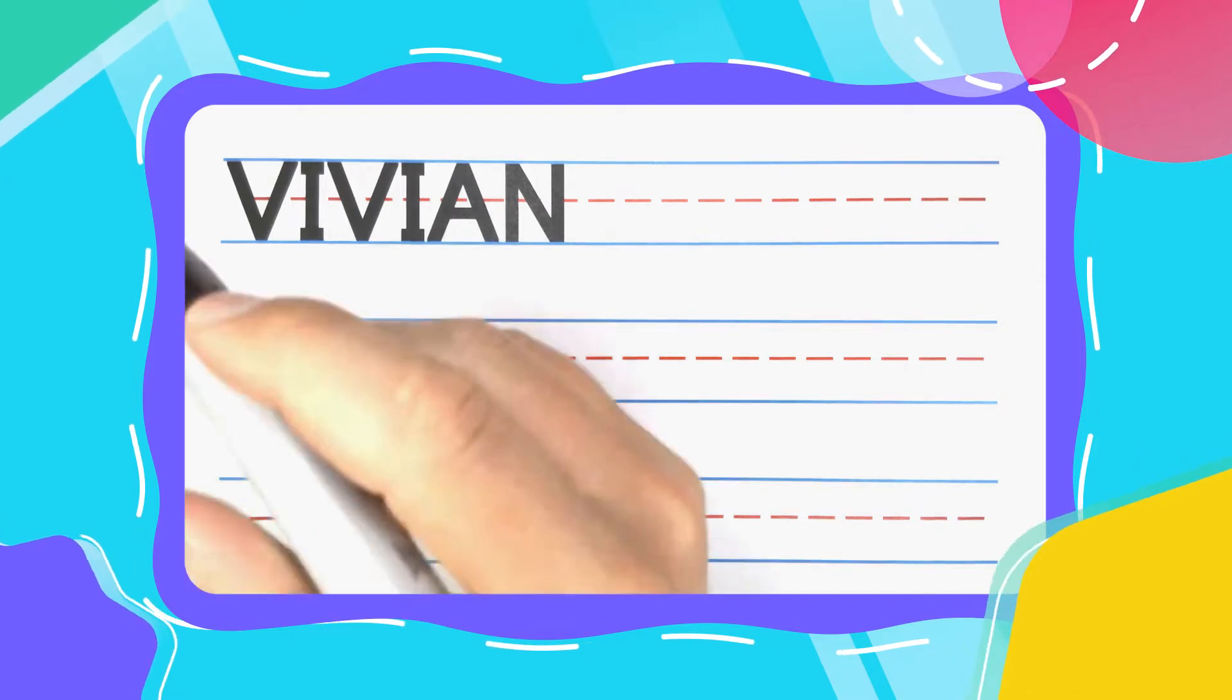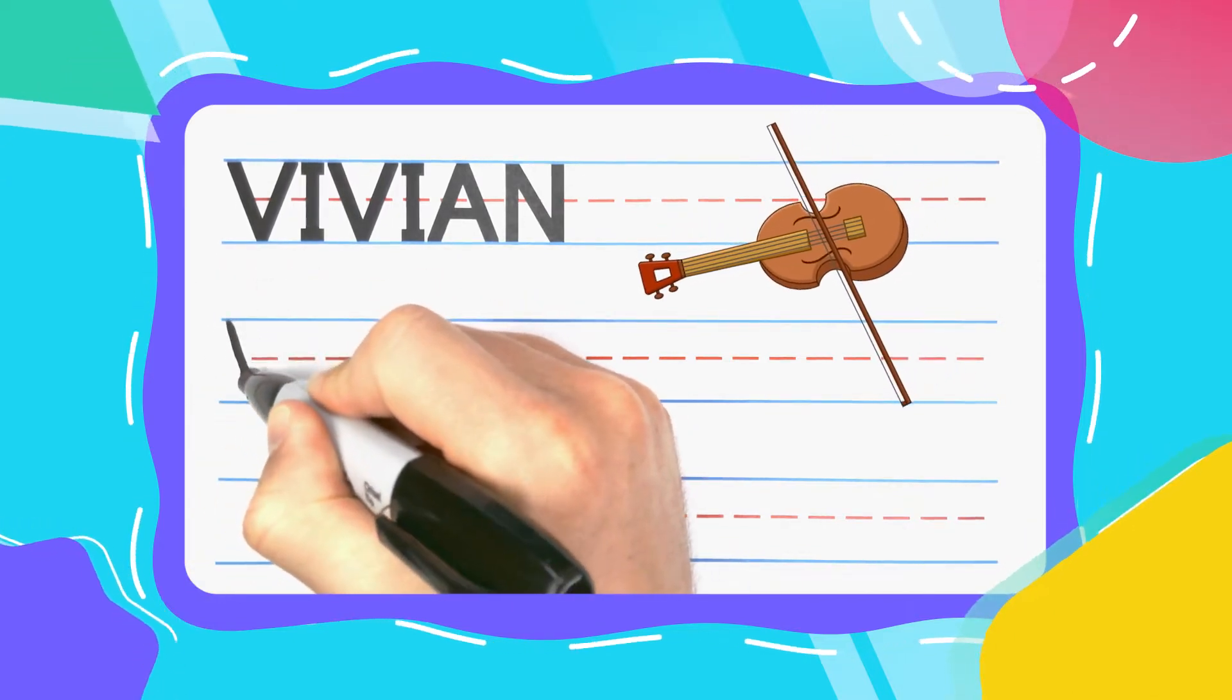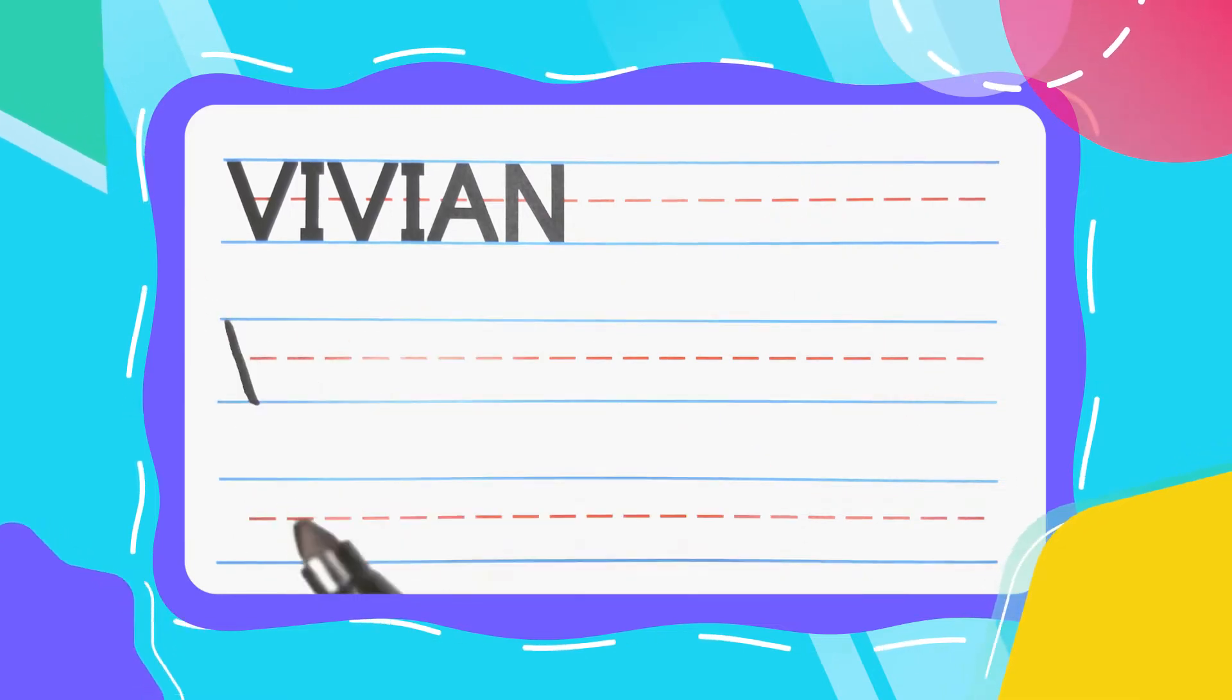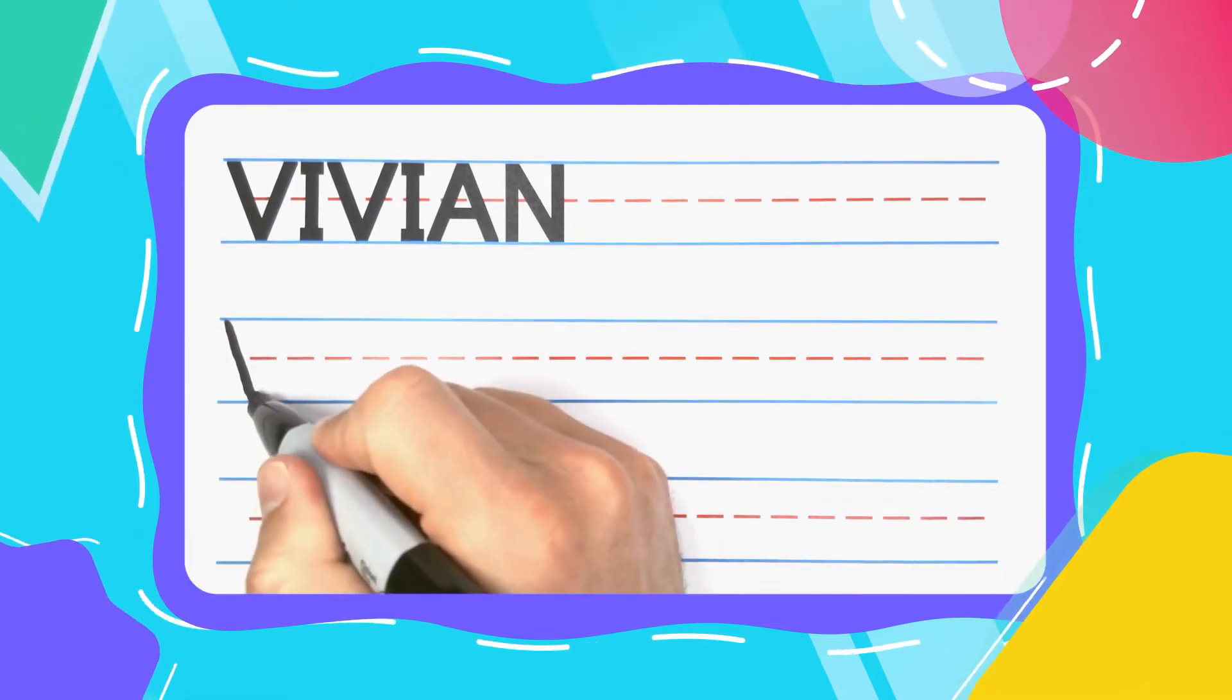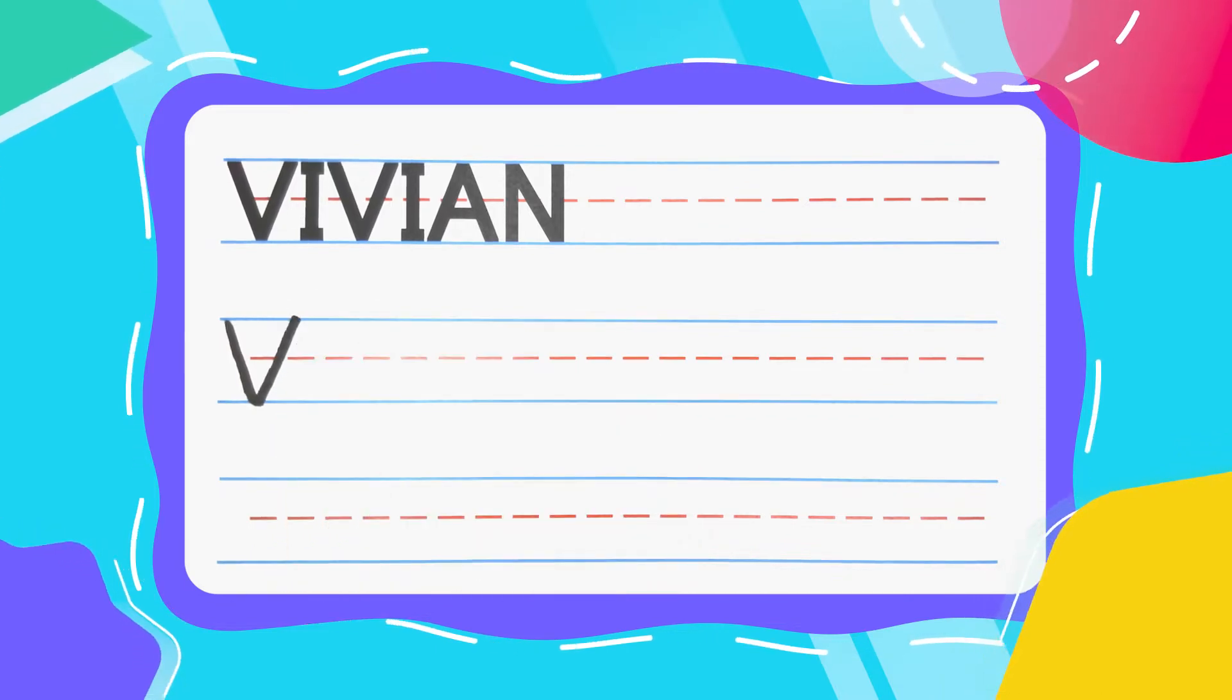The first letter in Vivian is the very vivacious violin V. And it's the first of two violin V's. Start with the diagonal line down, then keep your pen there and diagonal right back up to complete that V.